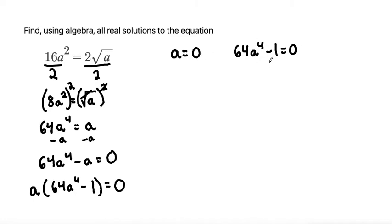For this one, we need to add 1 to both sides to isolate our a. So 64a to the power of 4 equals 1. Then get rid of the 64 by dividing both sides by 64. So we get a to the power of 4 equals 1 over 64.